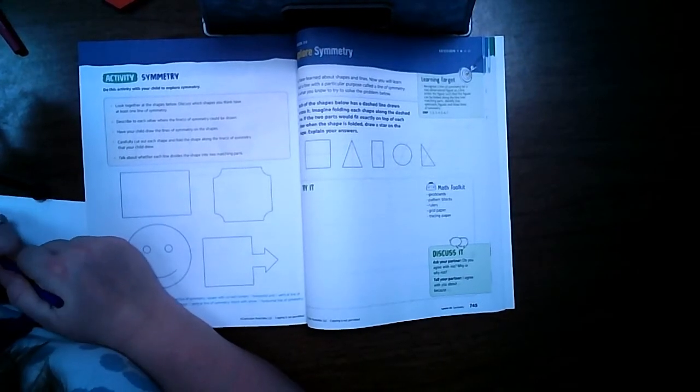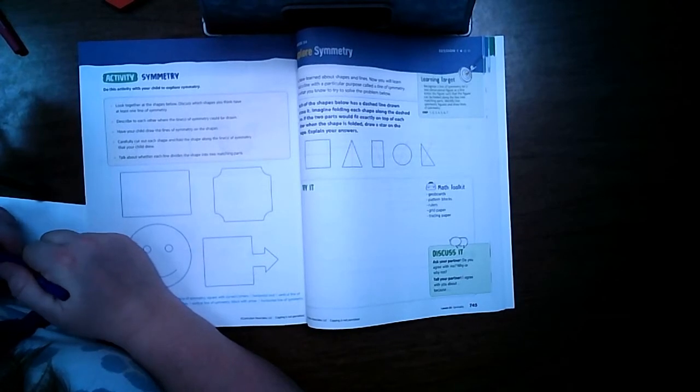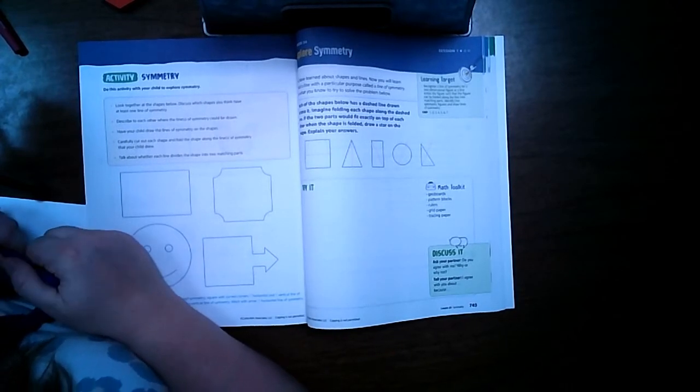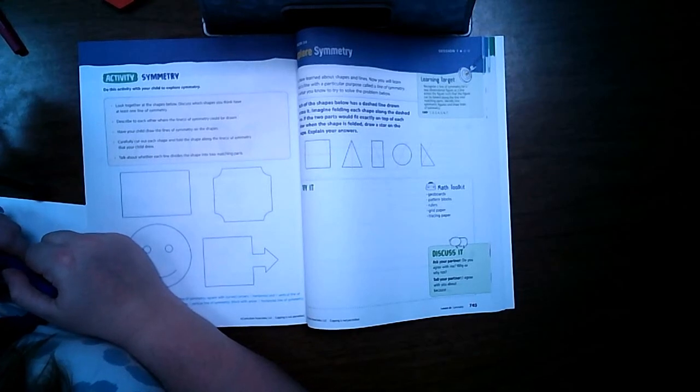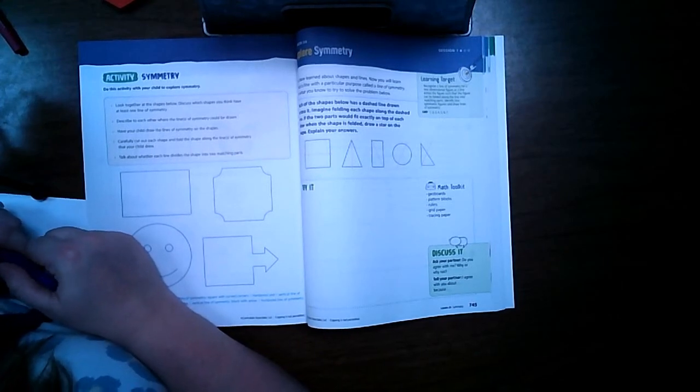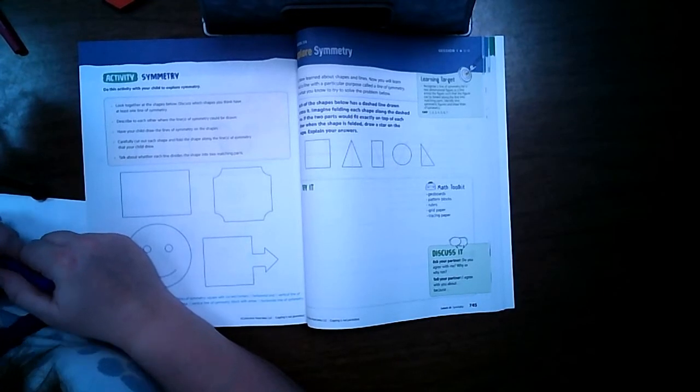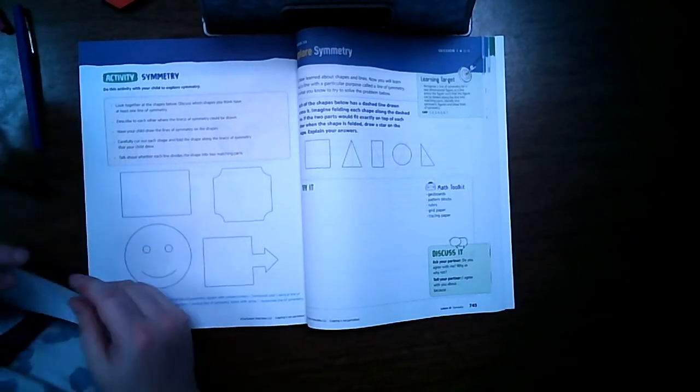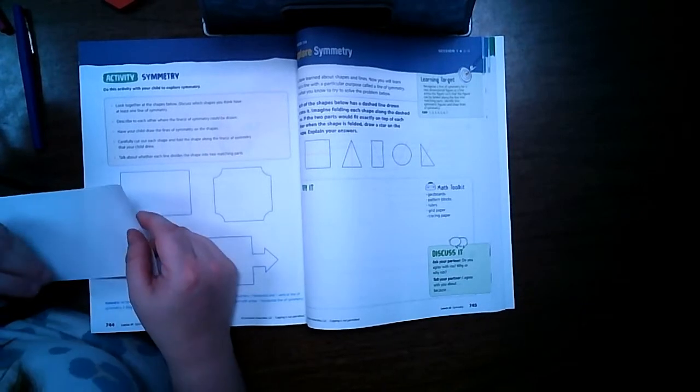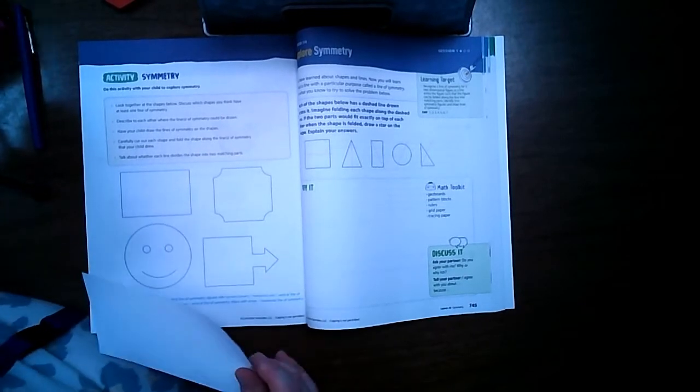Each of the shapes below has a dashed line drawn across it. Imagine folding each shape along the dashed line. If the two parts would fit exactly on top of each other when the shape is folded, draw a star on the shape. Explain your answer. So lines of symmetry means that you can fold something in half and it would make the exact same thing.